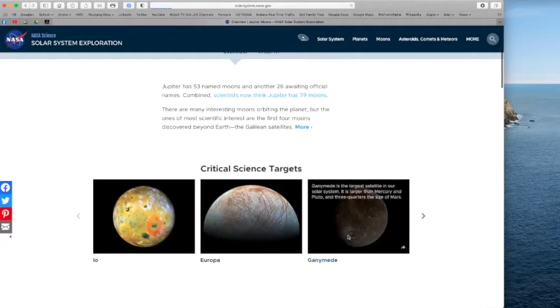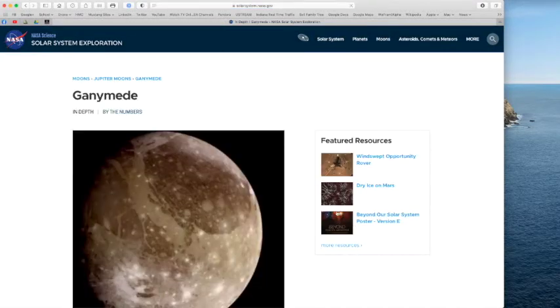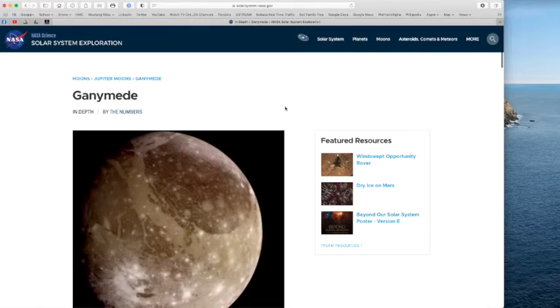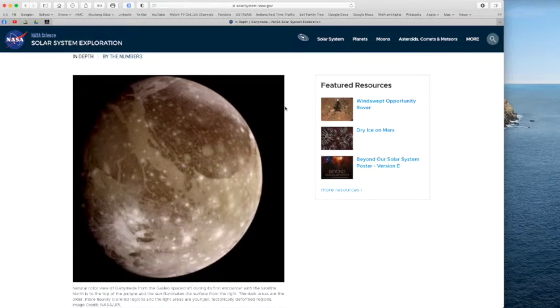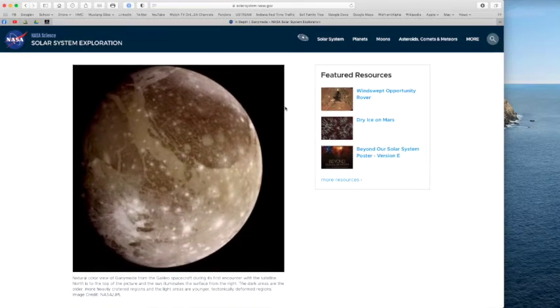The third Galilean moon of Jupiter that I'd like for you to know is called Ganymede. Ganymede is another icy moon and you can see some craters and some ice on this moon. This image was taken by the Galileo spacecraft.